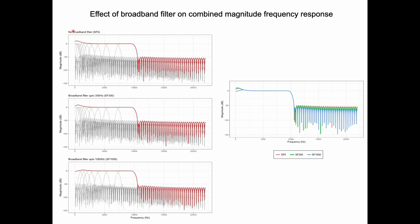We have three conditions: SF0 which doesn't have any broadband filter, SF300 which has broadband filter between 100 to 300 Hz, and SF1000 which has broadband filter from 100 to 1 kHz.